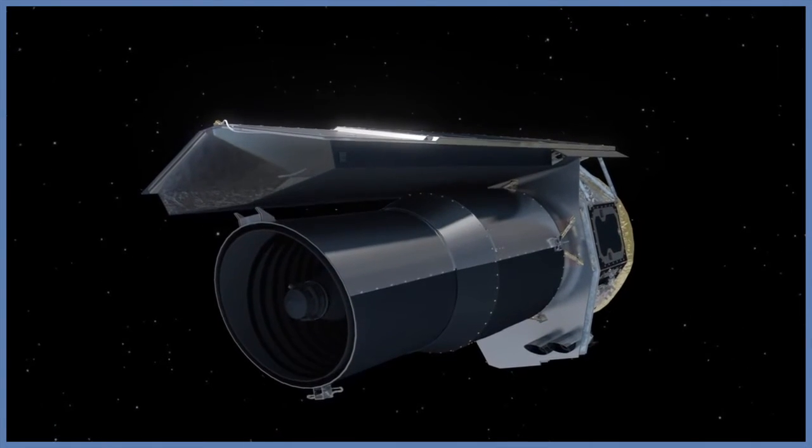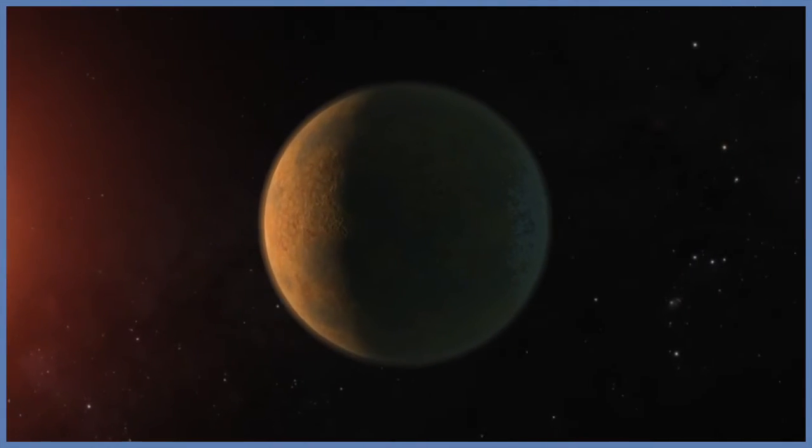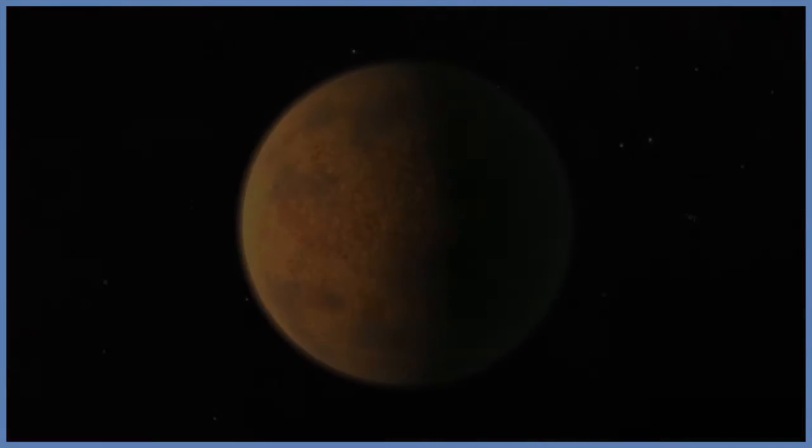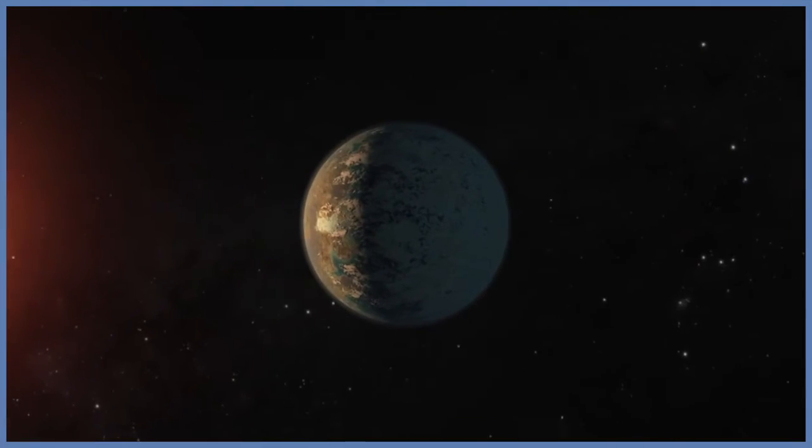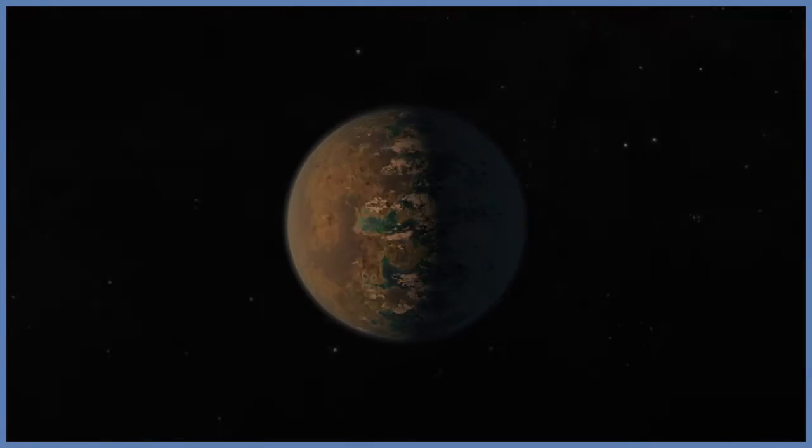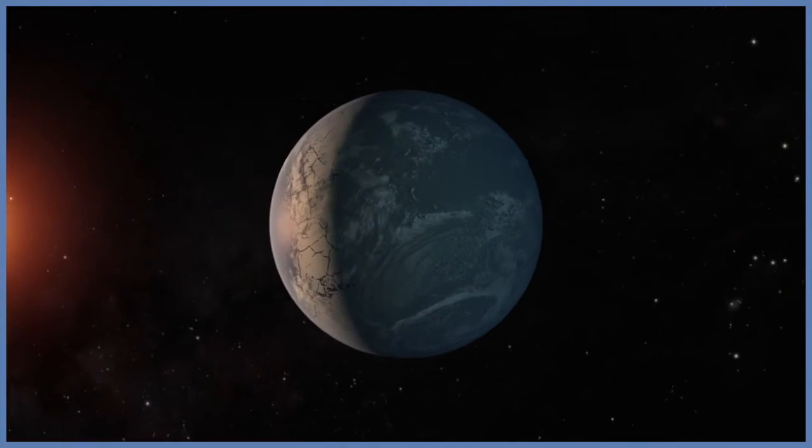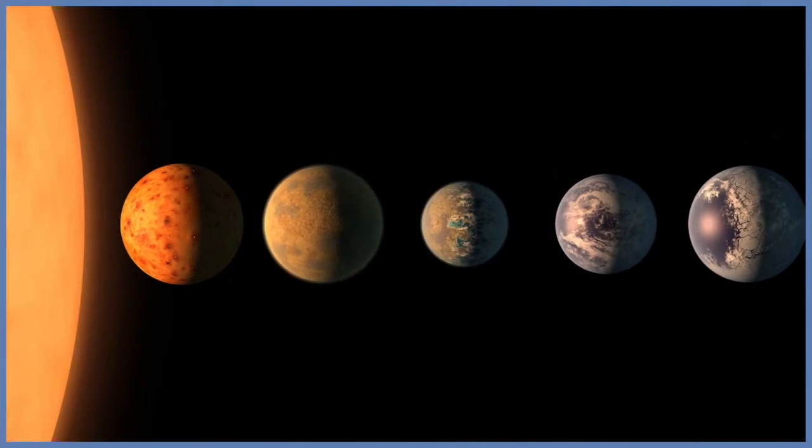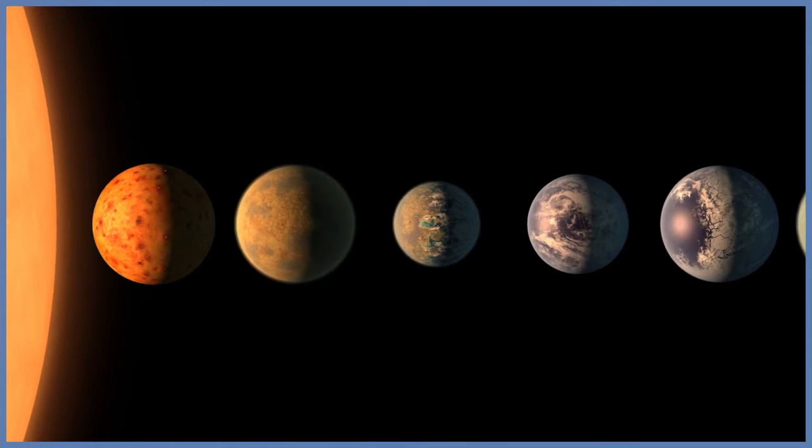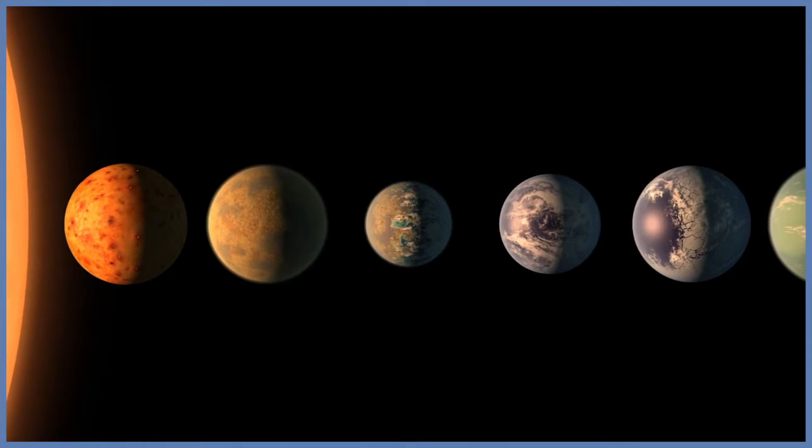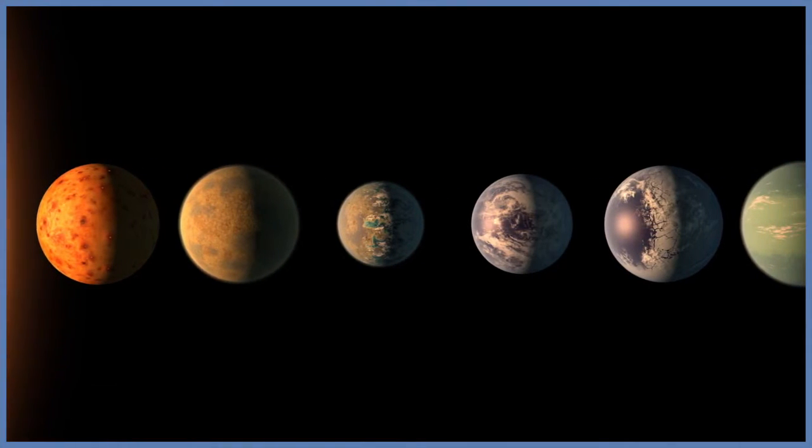Three of these planets are firmly located within the habitable zone. This is the area around a parent star where a rocky planet is most likely to have liquid water. The discovery sets a new record for the greatest number of habitable zone planets found around a single star outside of our solar system.